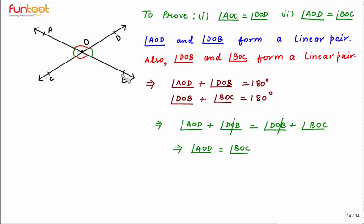So angle AOD = angle BOC is our second part. What we have done in this theorem is identify two sets of linear pairs in which one angle is common. We equated the sums of angles, and the common angle got cancelled. After cancelling, the vertically opposite angles became equal. The concept of linear pairs was used to prove vertically opposite angles are equal.